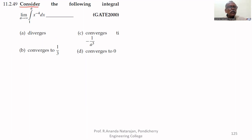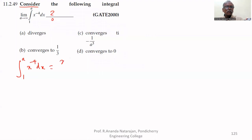Consider the following integral: limit as a tends to infinity of the integral from 1 to a of x to the power minus 4 dx. To find the value of that integral, we integrate: the integral of x to the power minus 4 dx is equal to x to the power minus 4 plus 1, upon minus 4 plus 1.